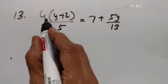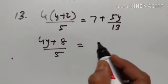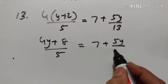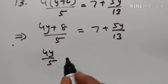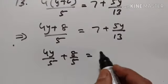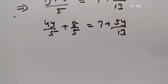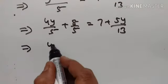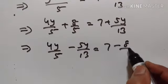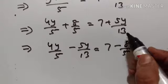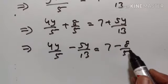13th problem. 4 into y plus 2 equals 4y plus 8 upon 5, which is equal to 7 plus 5y upon 13. We can write this as 4y upon 5 plus 8 upon 5 is equal to 7 plus 5y upon 13. Transposing: 4y upon 5 minus 5y upon 13 is equal to 7 minus 8 upon 5.